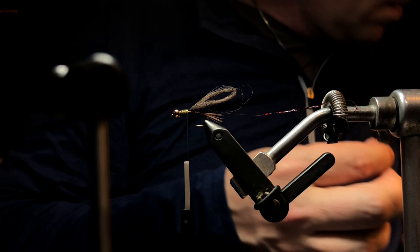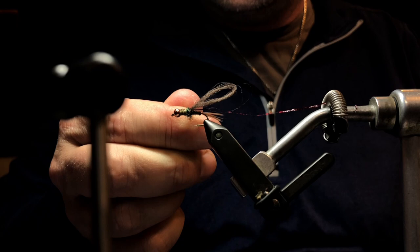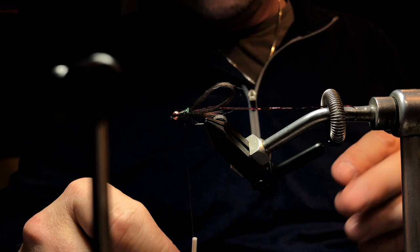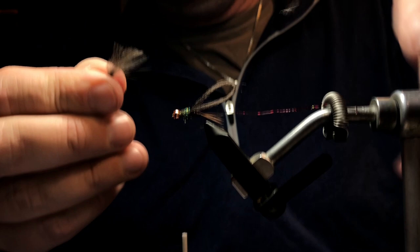You'll notice on the thorax I've built up already, because I'm using the 6 ought Uni, a fair amount of bulk, so I don't need a whole lot of this peacock ice dub that I'm going to start the thorax with here. The trick here is that I'm going to do half of the thorax. I'm going to tie in a bit of the peacock ice dub, and that's going to help to make the legs that I'm about to tie in pop, so that they don't sit down flush with the body but really pop out from the body like legs would.